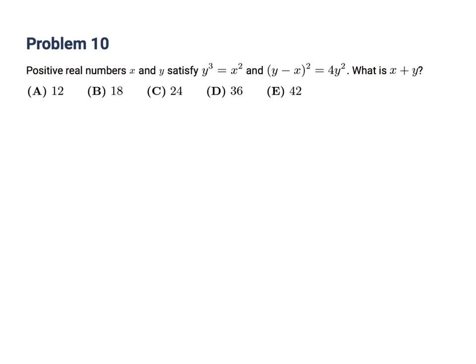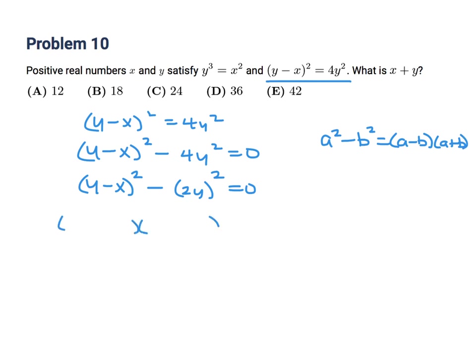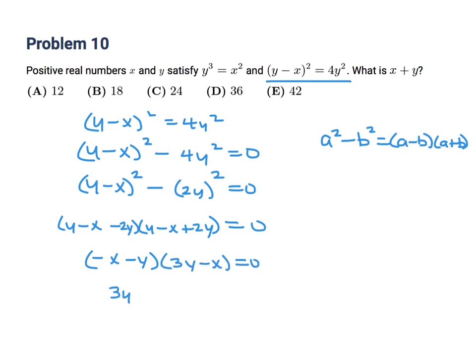Positive real numbers x and y satisfy y³ = x² and y - x² = 4y². What is x + y? Let's concentrate on y - x² = 4y² first. Rearranging, this almost looks like a difference of squares. Factoring it: (y - x - 2y)(y - x + 2y) = 0, which gives (−x − y)(3y − x) = 0. So either 3y = x or −x = y. But both x and y are positive, so the only valid solution is x = 3y.